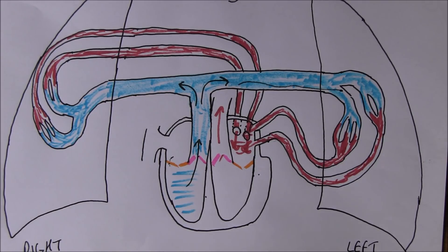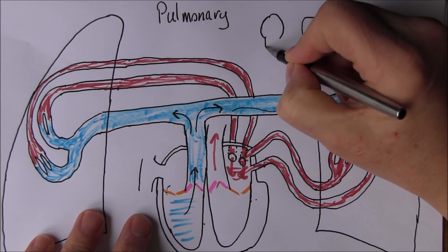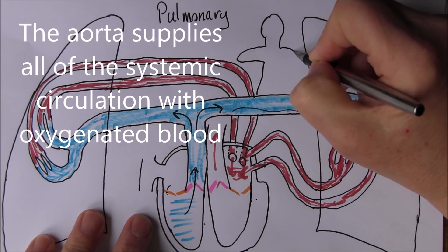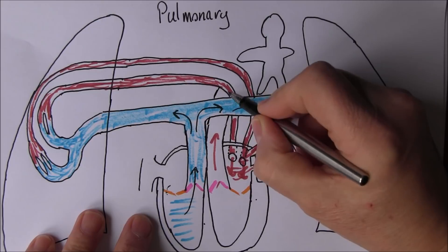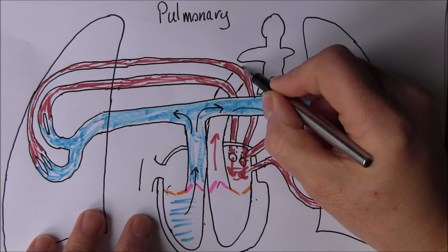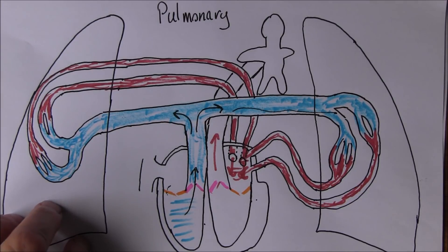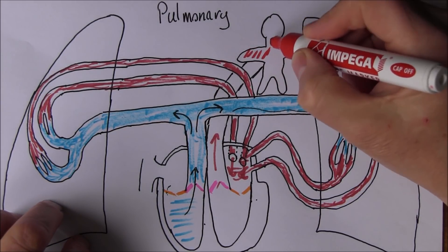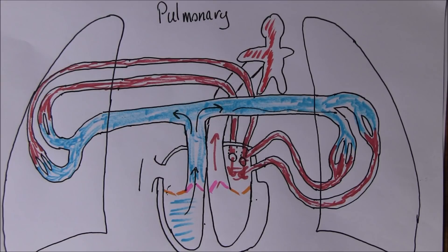All of the systemic circulation is receiving its blood supply from the aorta, supplying blood to all of the body. This blood is oxygenating the body, and as it goes through the body it's going to be deoxygenated. But we're measuring the amount of oxygen in the blood in the systemic arterial system — that's what we're measuring.